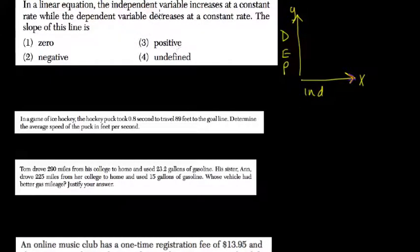What does it tell us? The independent variable increases at a constant rate while the dependent variable decreases at a constant rate. So as x goes up, y goes down.